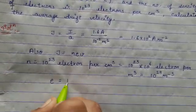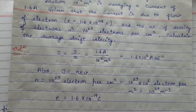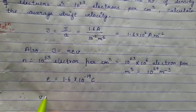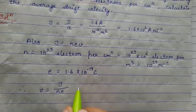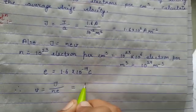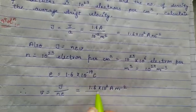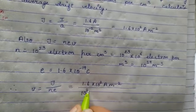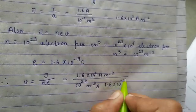The charge on the electron is 1.6 into 10 raised to power minus 19 coulomb. Therefore, to find the average drift velocity, v equals current density divided by number of electrons times charge on electron. Substituting the values: J is 1.6 into 10 raised to power 2 ampere per meter square, n is 10 raised to power 29 per meter cube, and charge on electron is 1.6 into 10 raised to power minus 19 coulomb.